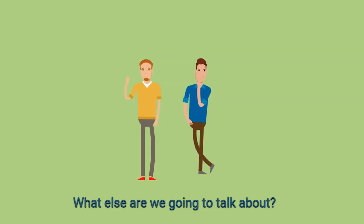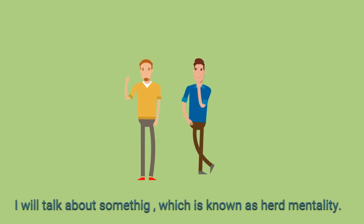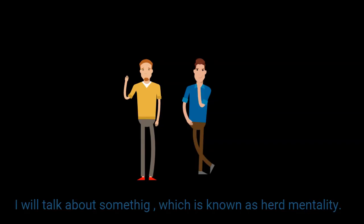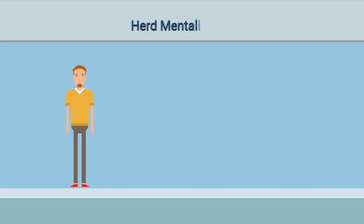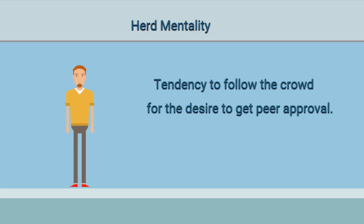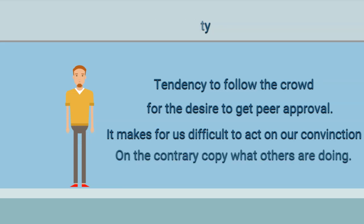What other behavioral biases can we talk about? The other thing we can talk about is something we all are exposed to called herd mentality. This is the tendency to follow the crowd due to a strong desire among humans for peer approval. This makes it difficult for us to act based on our own personal convictions or in a contrary manner to what other people are doing.